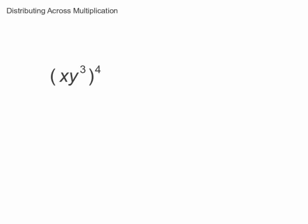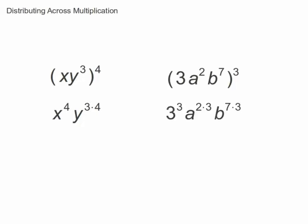When you distribute an exponent across a multiplication problem, it distributes to every factor. This includes the coefficient if there is one. To simplify, we apply the power to a power rule.